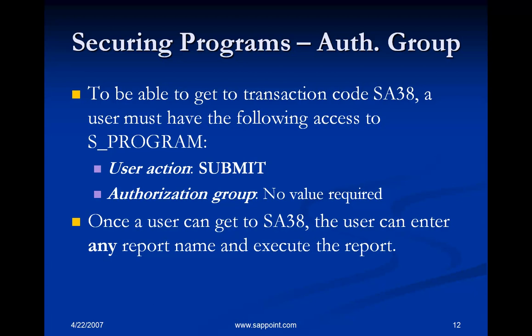S_PROGRAM has two fields in it. One of them is the user action, and the other field is authorization group. To execute a program, the minimum authorization value for the user action field has to be submitted — that is equivalent to 'execute'. So if a user has access to SA38 and S_PROGRAM contains the value 'submit' and authorization group 'S*', it means the user can execute any program in the SAP system. Controlling this object S_PROGRAM is very, very important and critical.